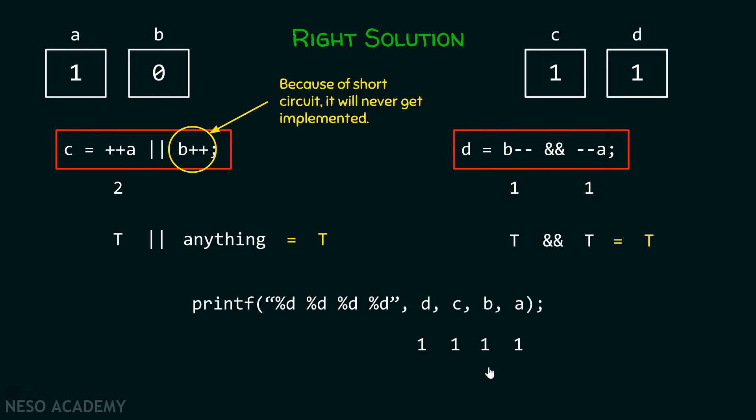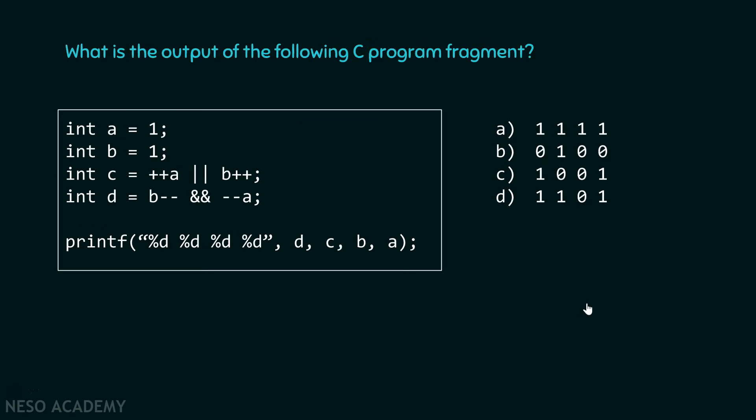Therefore, the final output would be 1101 instead of 1111. Hence, d is the correct option.